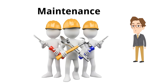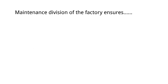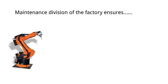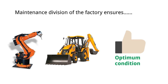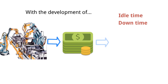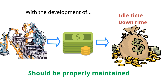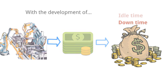So, what is maintenance? The maintenance division of the factory ensures the availability of machines and equipment to perform their function at optimum condition. With the development of special purpose machines and equipment, it costs a lot more money, so their idle time and downtime are becoming a lot more expensive day by day. Therefore, it is important that plant machinery and equipment should be properly maintained.